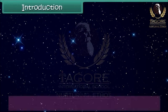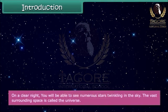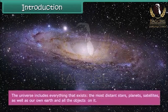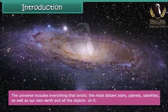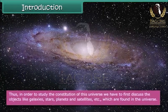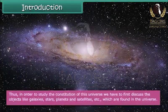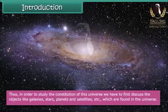On a clear night, you will be able to see numerous stars twinkling in the sky. The vast surrounding space is called the Universe. The Universe includes everything that exists — the most distant stars, planets, satellites, as well as our own Earth and all the objects on it. In order to study the constitution of this Universe, we have to first discuss objects like galaxies, stars, planets, and satellites found in the Universe.